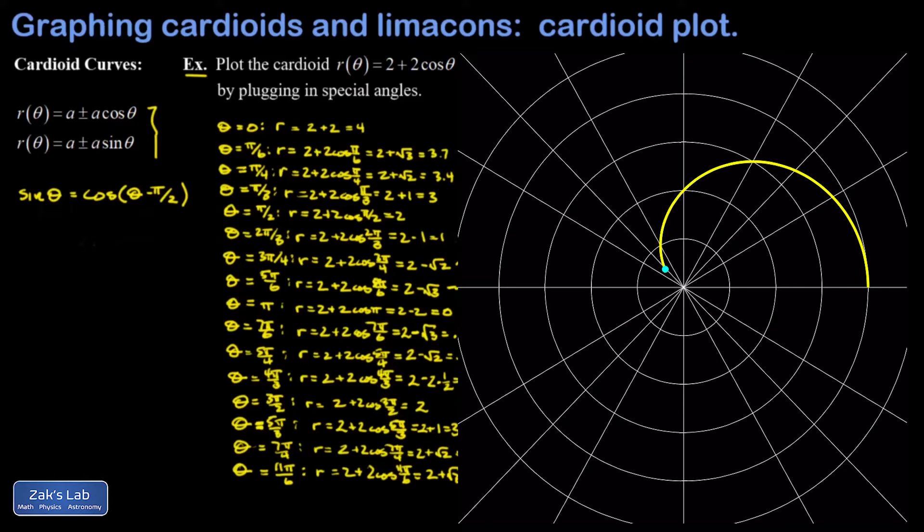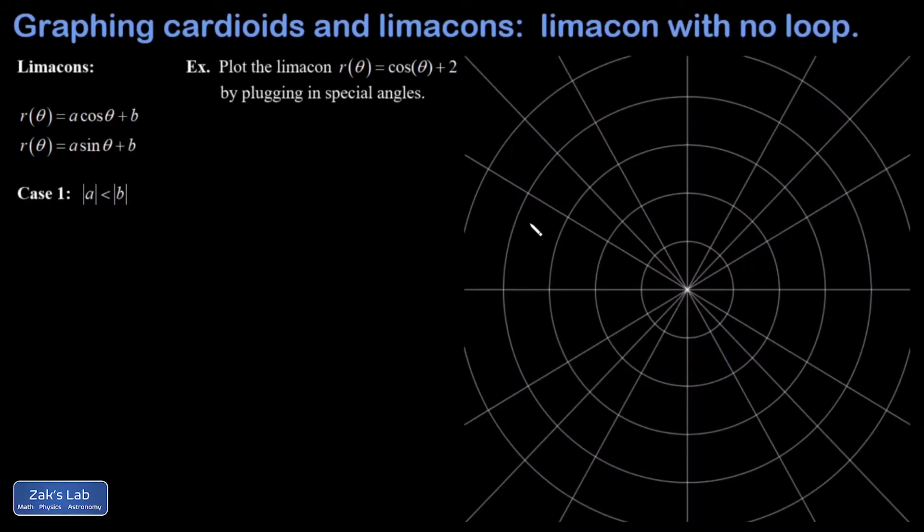Okay, so there's our cardioid curve and it's kind of a heart shape, which is why these things are called cardioids. Next we're going to look at our first limaçon. The limaçon curves are defined this way: r = a cos(θ) + b or r = a sin(θ) + b.